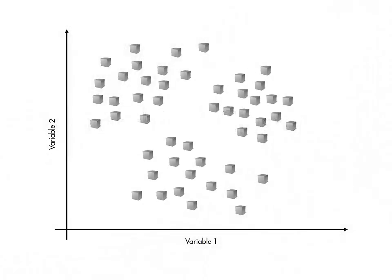One way to cluster data without specifying an a priori number of groups is to build a map of the full structure of the data. You can do this by recursively linking pairs of groups into larger groups, in order of the distance between them.